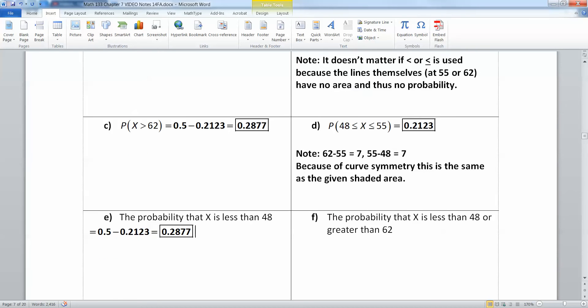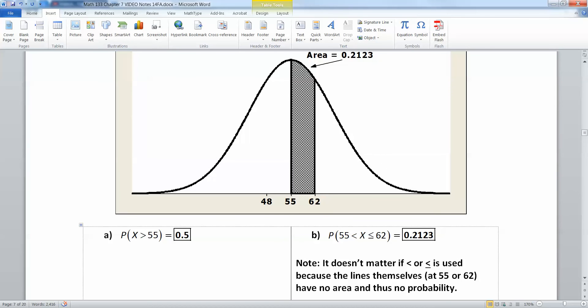Let me make that argument one more time. Remember this 48 to 55 region, you can't see it but it's there, is 0.2123. The whole half from 55 over to the left is 0.5. So if you take 0.5 and you take away 0.2123, you're going to have an area in the left tail identical to this area in the right tail which is 0.2877.